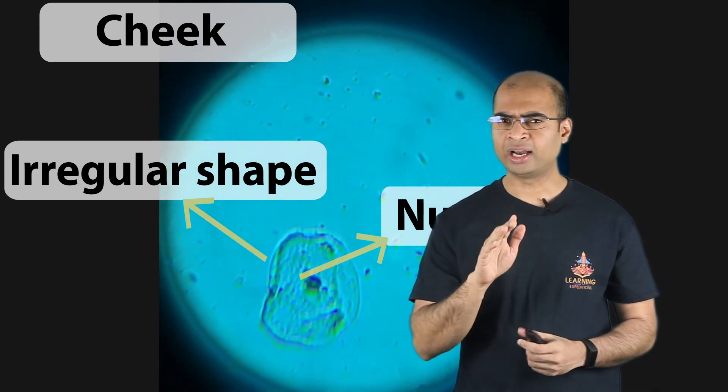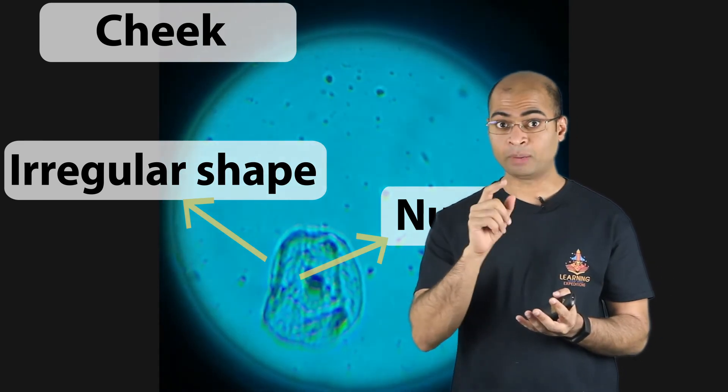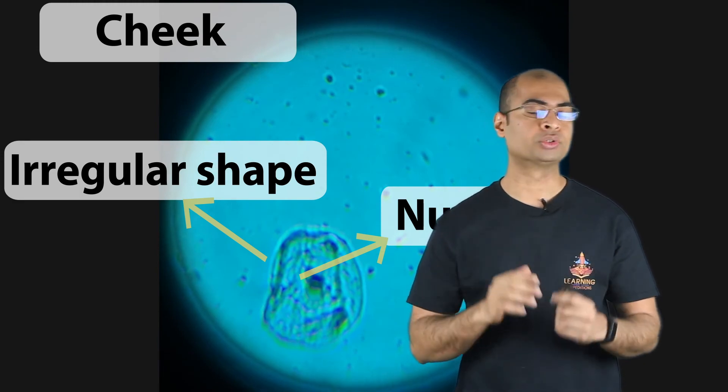Now, this tells us that although there are differences between different cells, some elements like nucleus are actually common among most of these.